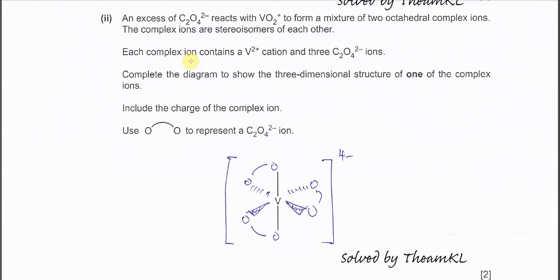Part 2. In excess of C₂O₄²⁻, which is actually a bidentate ligand, it reacts with VO²⁺ to form a mixture of two octahedral complex ions. Each complex ion contains a VO²⁺ cation and three C₂O₄²⁻ ions.